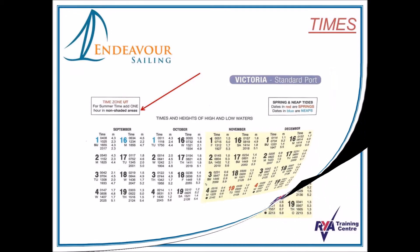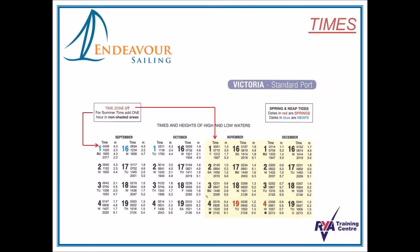To indicate this in the almanac we have the non-shaded areas and the shaded areas. If the date is not shaded, you need to add an hour. If the area is shaded, this is already in UT time and no correction is needed.